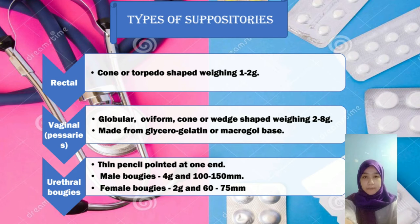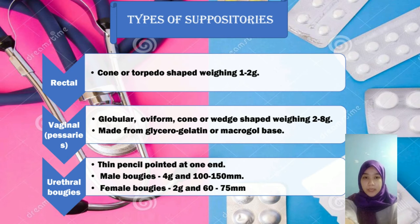Suppositories have three types. First, rectal: cone or torpedo shape, weighing 1 to 2 grams. Second, vaginal: globular or oviform, cone or wedge shape, weighing 2 to 8 grams, made from glycerogelatin or macrogol base. Third, urethral: pencil-shaped, pointed at one end. Male: 4 grams, 100 to 150 mm. Female: 2 grams, 60 to 75 mm.